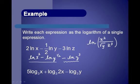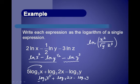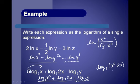For 5·log_3(x) + log_3(2x) − log_3(y): the 5 out front becomes the power, giving log_3(x^5). Adding logs means multiplying, so log_3(x^5) + log_3(2x) = log_3(x^5 · 2x) = log_3(2x^6). Subtracting log_3(y) means dividing by y. The final answer is log_3(2x^6 / y).